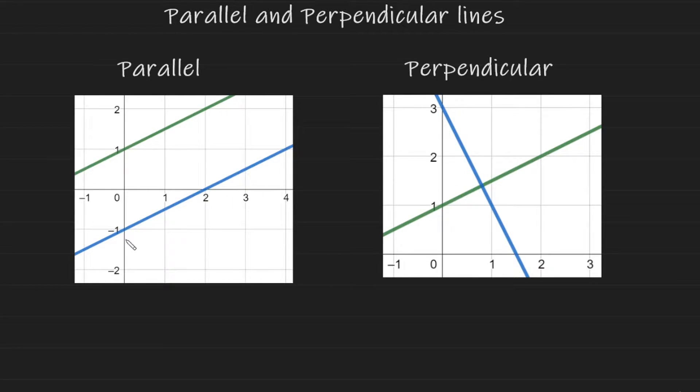So let's begin with parallel lines. Two lines are parallel if they look like this image here on the left. They are traveling in the same direction. They will never meet each other. And what this also means is that they have the same gradient. They have the same rise over run, as you can see here.